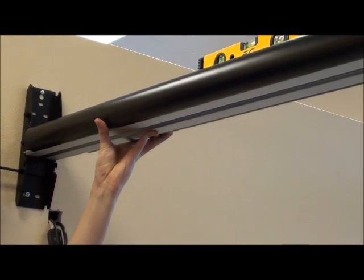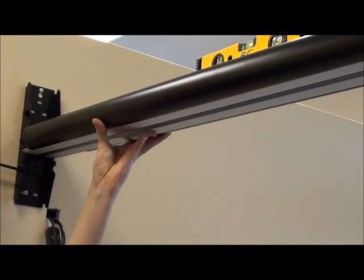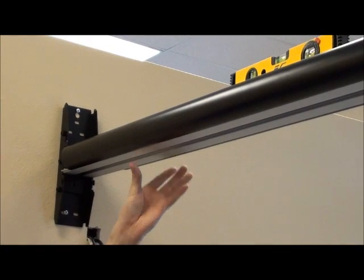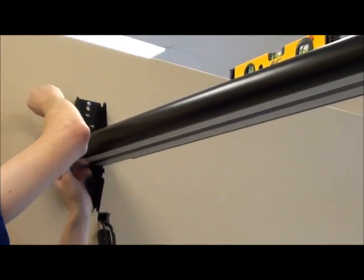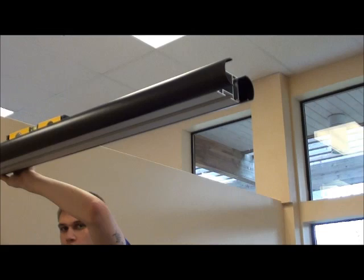This is the leveling of the wall arm. We use the level to figure out the proper angle for the wall arm, and then tighten up the bolts on the top and bottom to secure it.